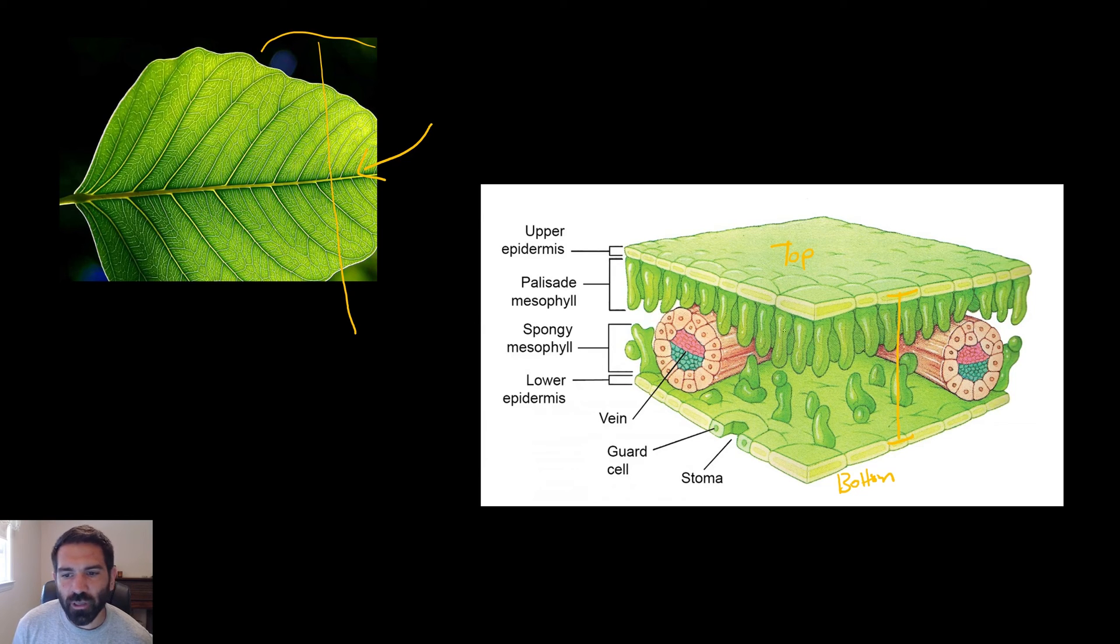Right here, this pink and purple thing coming in is a vein that would contain the xylem from earlier that's delivering our water. So now we know how the plant cells get their water. It comes up through the xylem tissue, but how do they get their carbon dioxide?